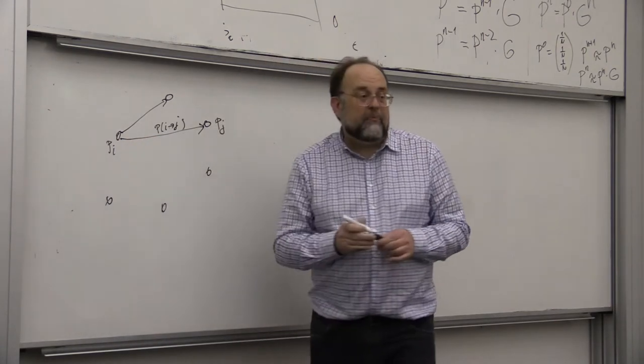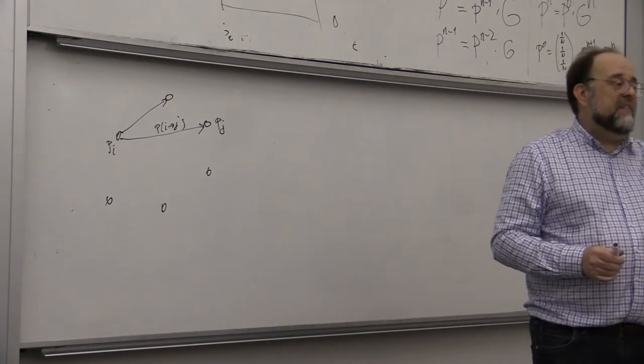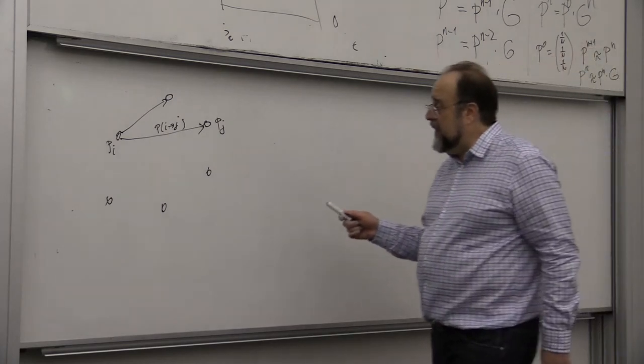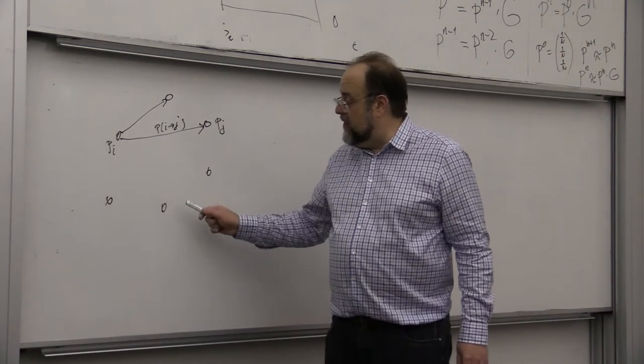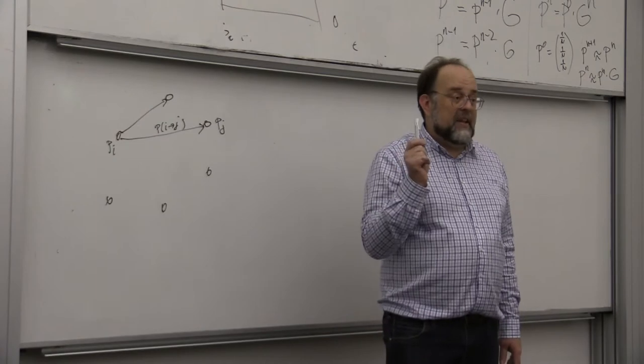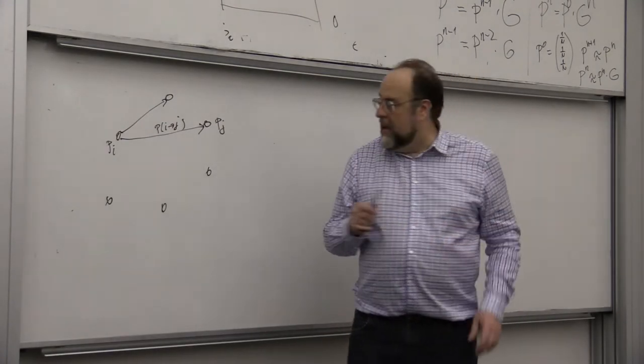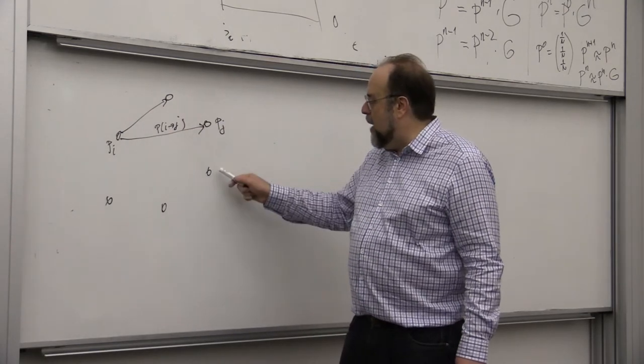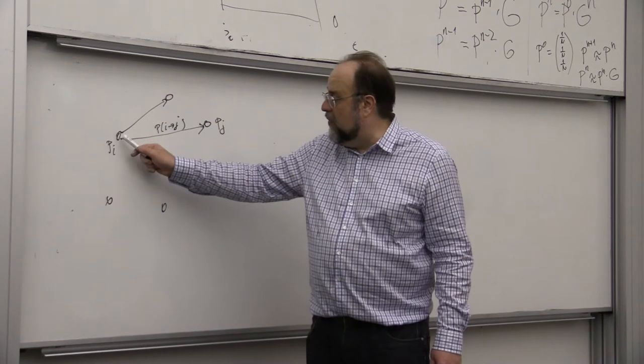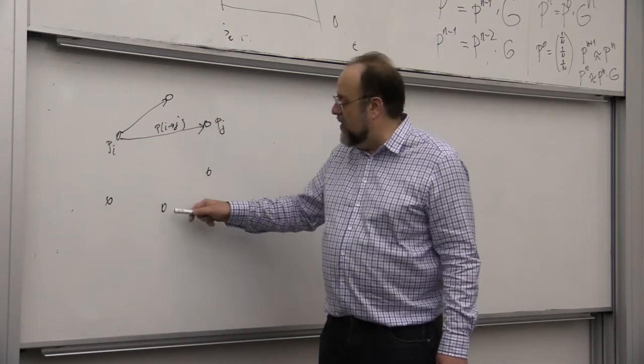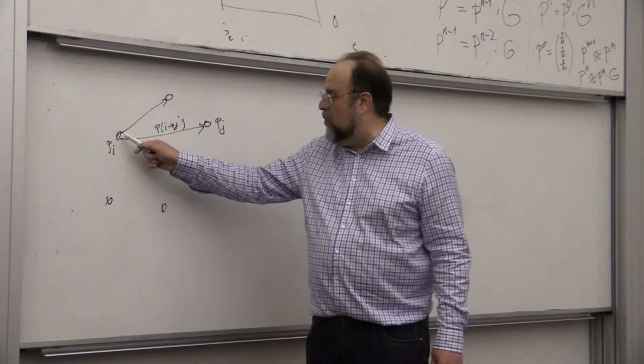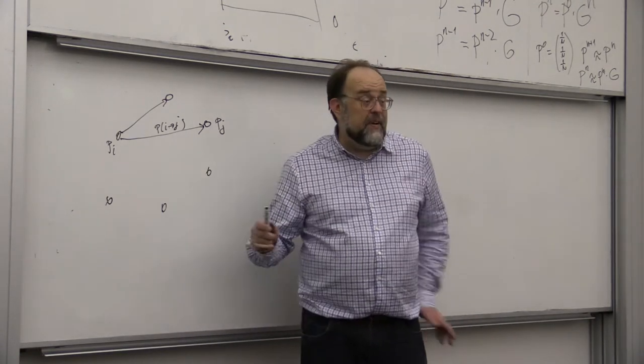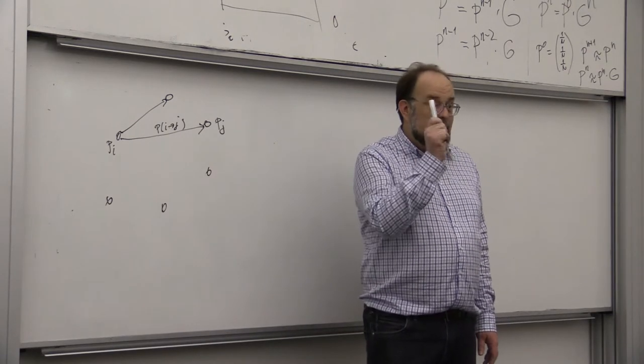PJ. Then your Markov chain has to satisfy two properties. First property is that it is strongly connected. What does this mean? It means that for every two states, there exists a path that from PI goes to PJ, and vice versa, from PJ goes back to PI. So simply this directed graph has to be strongly connected, that's one.